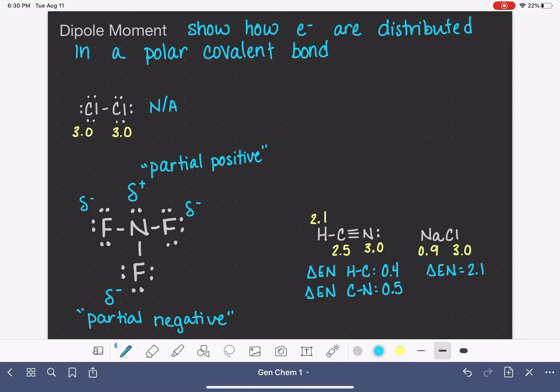Because all of these bonds are identical, you could put delta negative signs, partial negative signs on all of the fluorines. This is one way that we can indicate the dipole moment in this molecule.